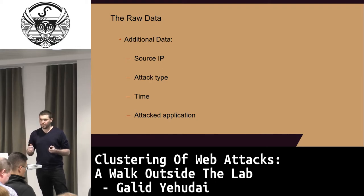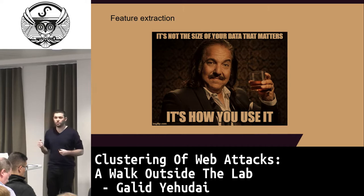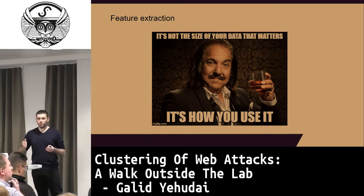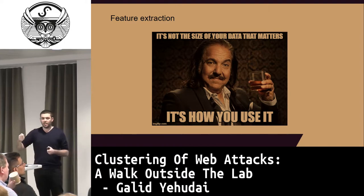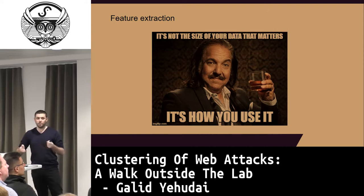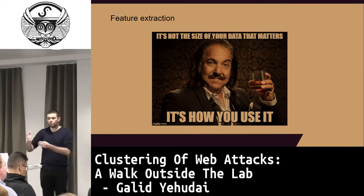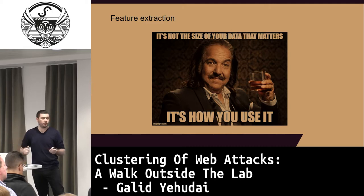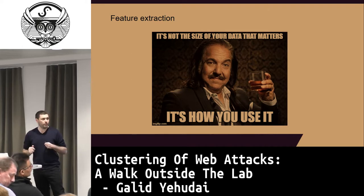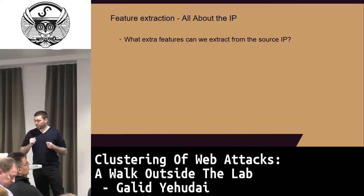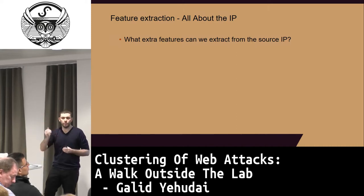We can extract much more out of the raw data through feature extraction — taking the raw data and extracting more attributes. A feature is every attribute in the data: the IP is a feature, the URL is a feature, the user agent is a feature. Let's look at a couple of features we can extract more from — one of them is the IP.